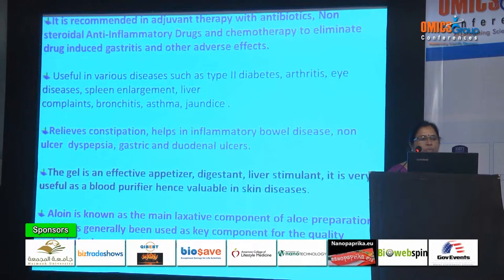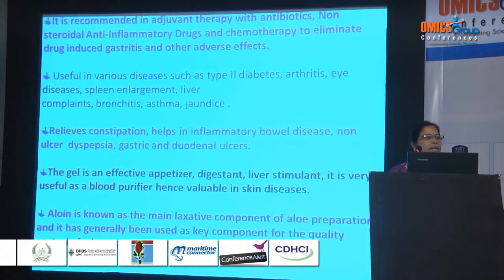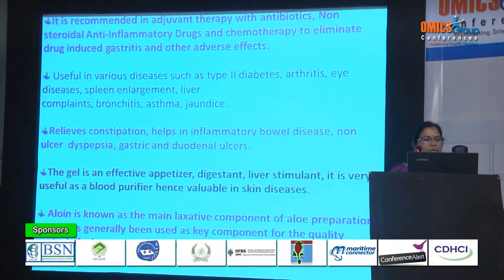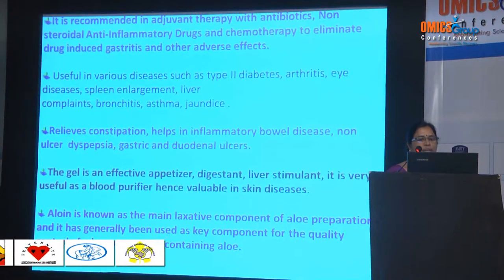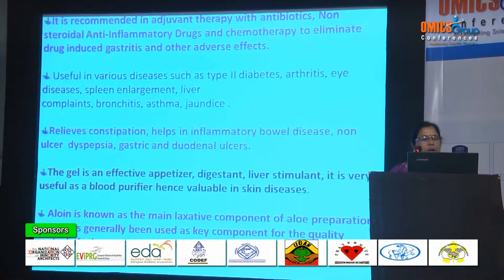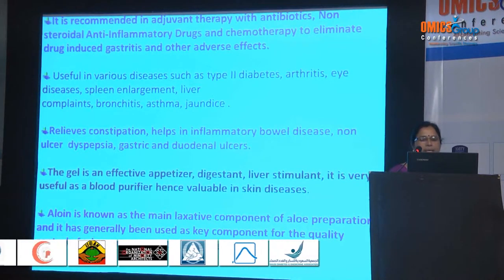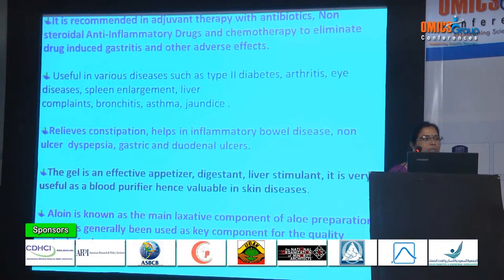It also relieves constipation, helps in inflammatory bowel disease, non-ulcer dyspepsia, gastric and duodenal ulcers. The gel is an effective appetizer, digestant, liver stimulant, and is very useful as a blood purifier. Hence, it is very valuable in skin diseases. Alloin is known as the main active component of aloe preparations and has generally been used as a key component for quality control of pharmaceuticals containing aloe.